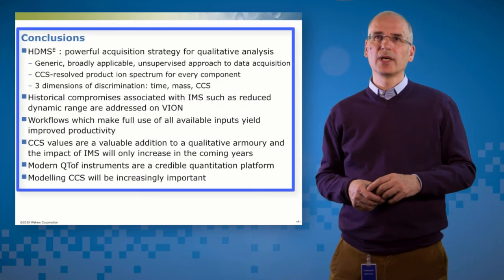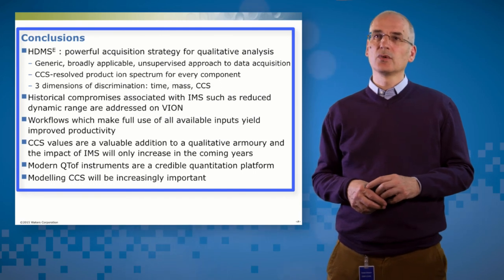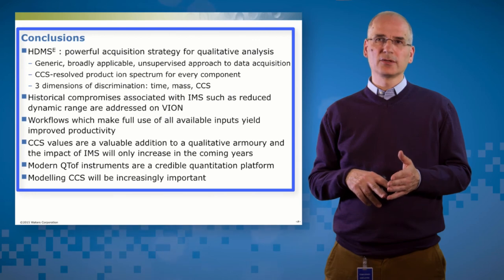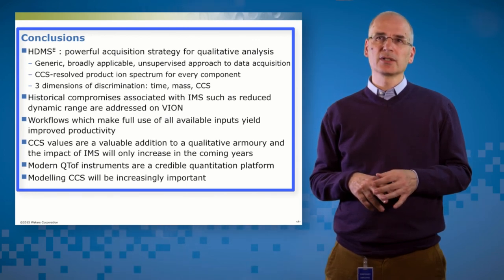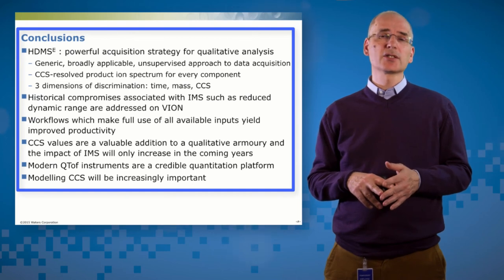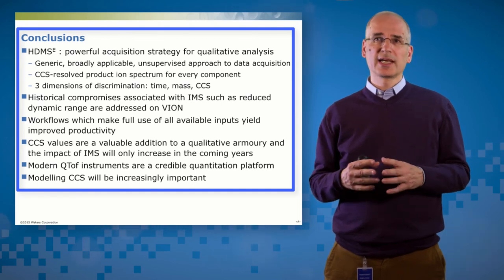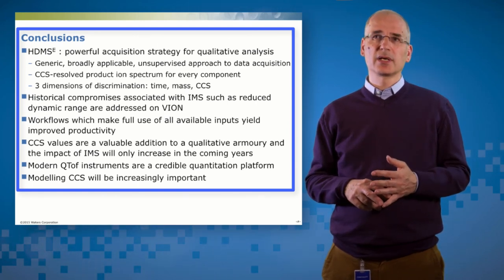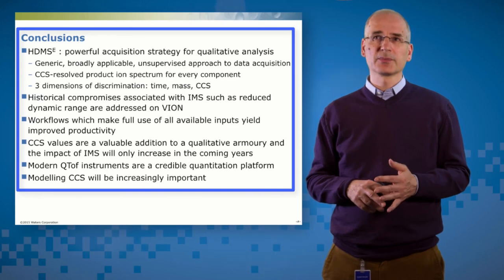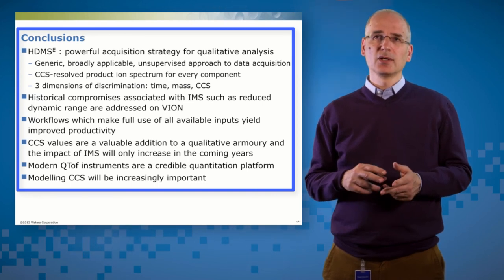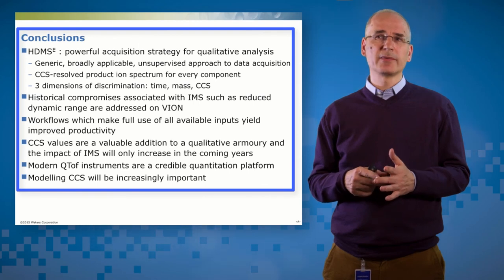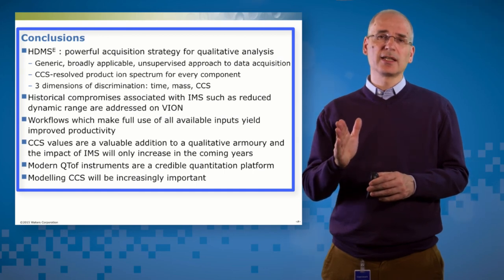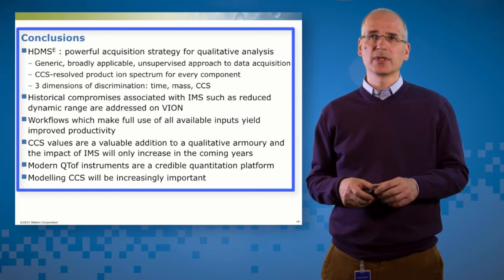So here are the conclusions that I'd take away from the work that we've done here. The first is HDMSE has a huge amount of value for doing qualitative investigations. It's a generic approach, very broadly applicable. It's unsupervised, so it's unprejudiced. Capture all the data and then figure out what's present. In HDMSE, we have a CCS result product ion spectrum for every component in the sample, and most importantly, the drug metabolites that we're looking for. We have three dimensions of discrimination. So not just time and mass, which we've always had, but we also have CCS. And remember, in those tables, CCS is right there in front of you from the very beginning. No extra work done to pull those out.